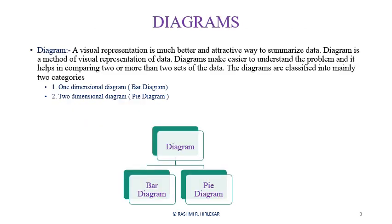Today we are going to see the meaning of diagram. Before that, we will see the difference between graph and diagram. We have seen and solved some problems of graphs. There is a slight difference: a graph is drawn using class interval and frequency. When class interval and frequency are given, we draw a graph. When there is no class interval, we draw a diagram.